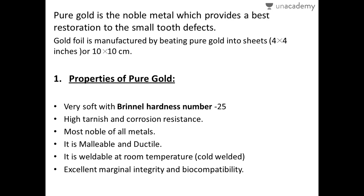The measurement of the sheets formed is 4x4 inches or 10x10 centimeters. Pure gold is manufactured by beating it into sheets of these measurements. During compaction into the restoration, we roll the sheets into cylindrical form, form a roll, and then compact or condense them into the cavity.